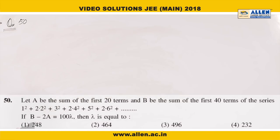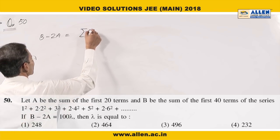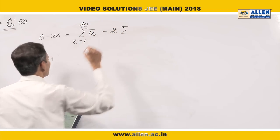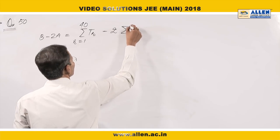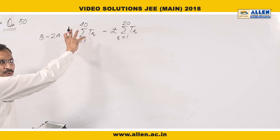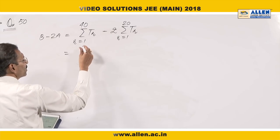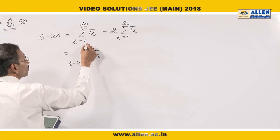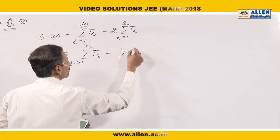Question number 50. B minus 2A. B is sum of first 40 terms, summation TR, R is from 1 to 40 minus capital A is sum of first 20 terms. So TR, R is from 1 to 20. Now, first 20 terms of this expression will be cancelled from this part. We will have R equals to 21 to 40 minus sum of first 20 terms.